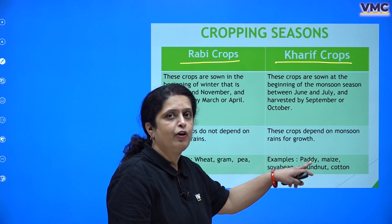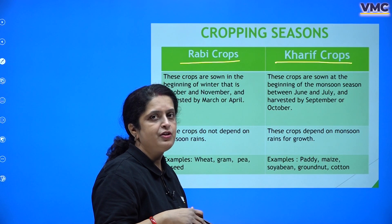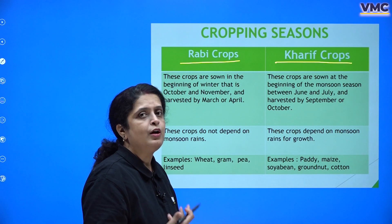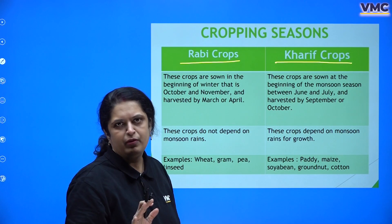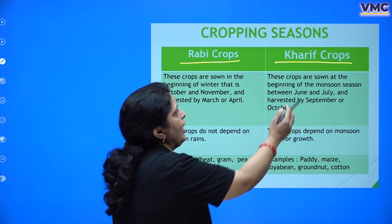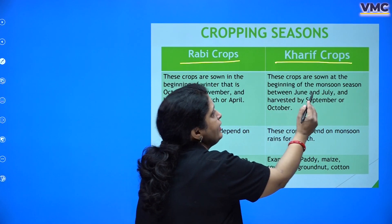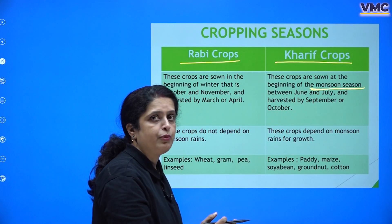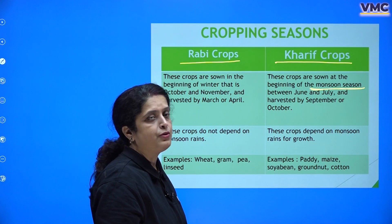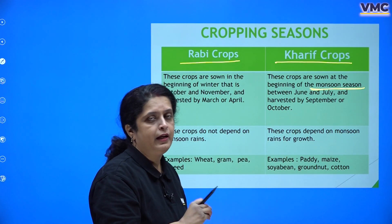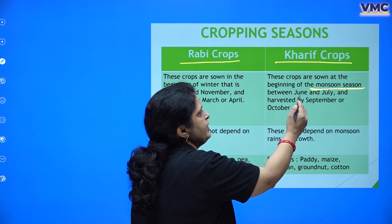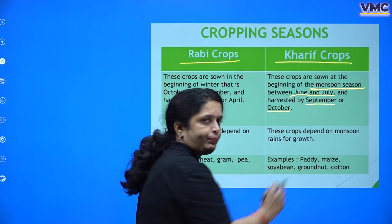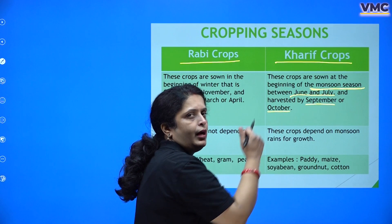Let's first look at the Kharif crop. I used to remember it this way: 'Kharif khata hai' — meaning it needs a lot of food, and what kind of food? Water! Kharif crops are sown at the beginning of the monsoon season — India is affected by monsoon — from June to July, and harvested at the onset of winters.